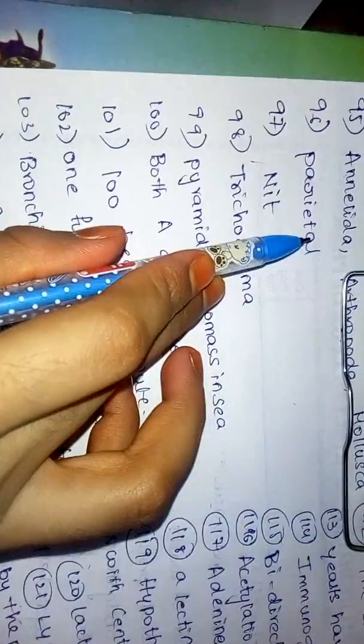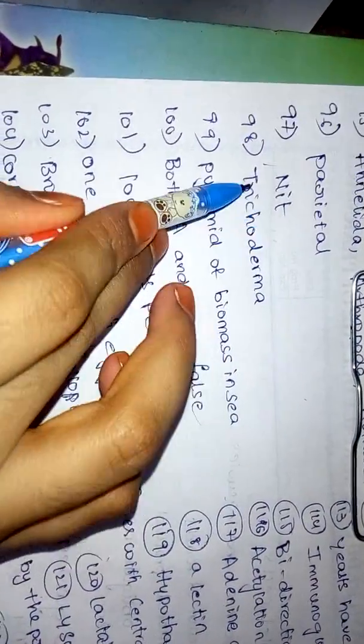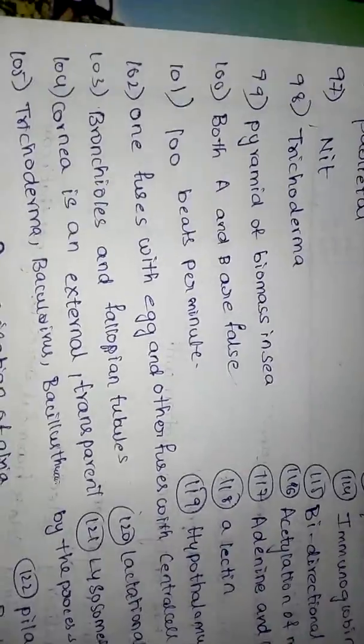This is why we have to make this part of the system. Annelida, Arthropoda, Mollusca, 961. Parietal. I don't know if you have any question. I have written all of these questions, but if you don't find any one, then you can ask.